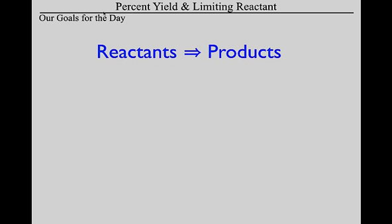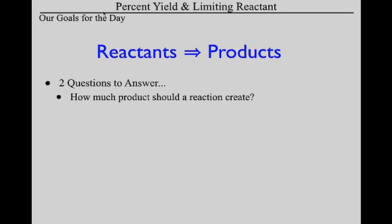Here's the big picture. We understand that when we write balanced equations, we've got reactants and products. Today we're going to answer two questions. Question number one: when we carry out a reaction, how much product should we create? That answer is what is called percent yield — if we know how much reactant went in, we can figure out how much product came out.